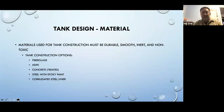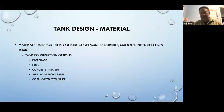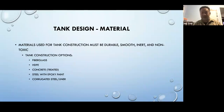Tank construction materials must be durable, smooth, inert, and non-toxic — food grade, basically. Options include fiberglass, HDPE, concrete, steel with epoxy paint, corrugated steel with liner, and stainless steel with glass bonding. Currently it's very difficult to get any of these tanks constructed at a reasonable price — costs have gone up 30–40% within the last six months — so be aware of price increases due to material and shipping costs.